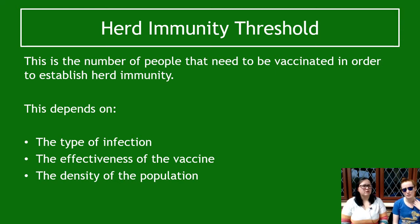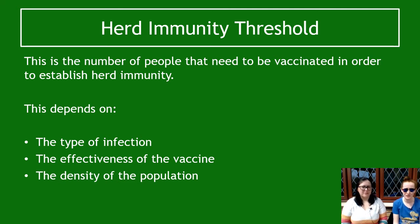The herd immunity threshold depends on a couple of different factors, such as the type of infection and how dangerous it could be, the effectiveness of the vaccine — you'll have heard that some COVID vaccines are more effective than others, having a higher percentage of immunity — and also the density of the population. If there are a lot of people, you're going to need a lot of immunity to actually reach the point of herd immunity.